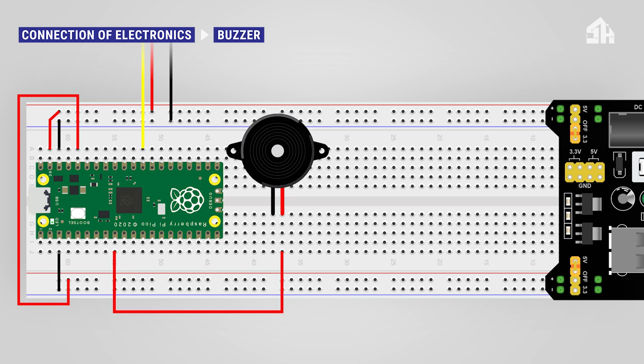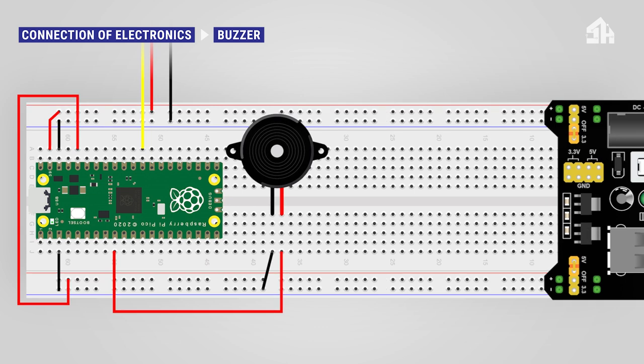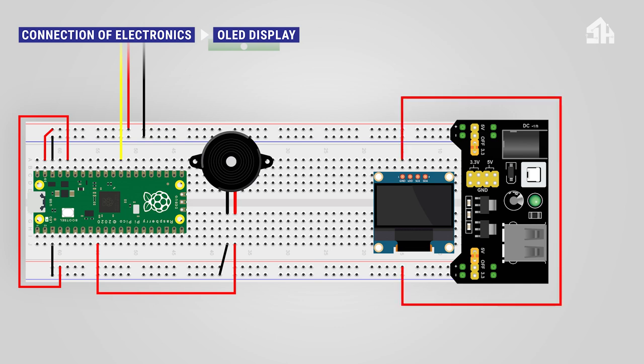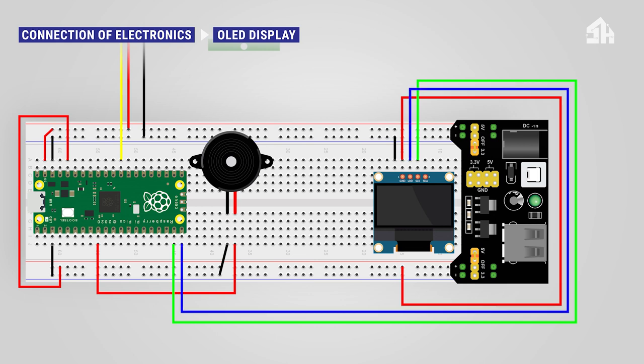For installing the OLED display, connect the red cable to the 3v3 rail, connect the black cable to the GND rail, connect the green cable to GPIO 14, and connect the blue cable to GPIO 15.